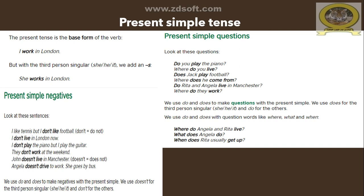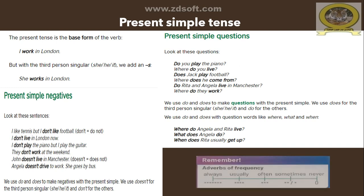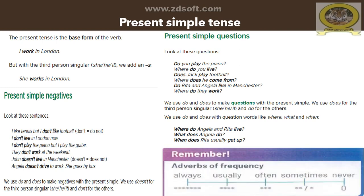Where do Angela and Rita live? What does Angela do? When does Rita usually get up? Finally, let's remember the adverbs of frequency. Adverbs of frequency are words we use to express how often we do an activity or action — like always, usually, often, sometimes, and never.